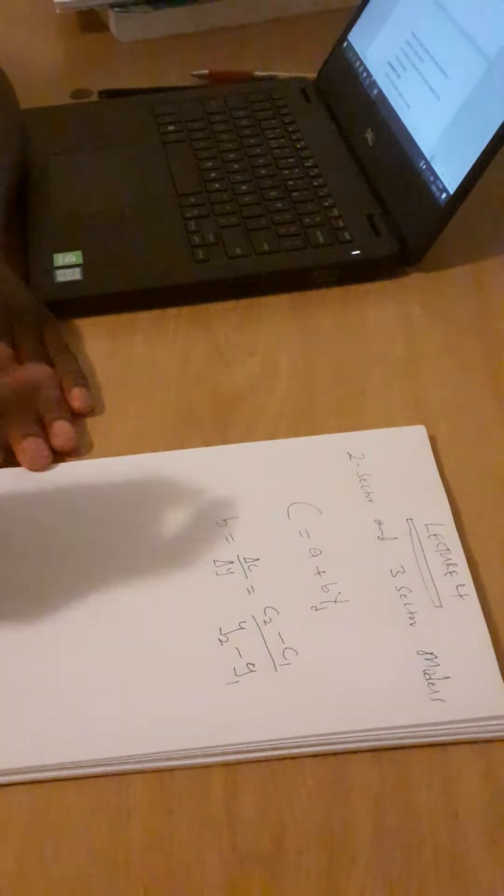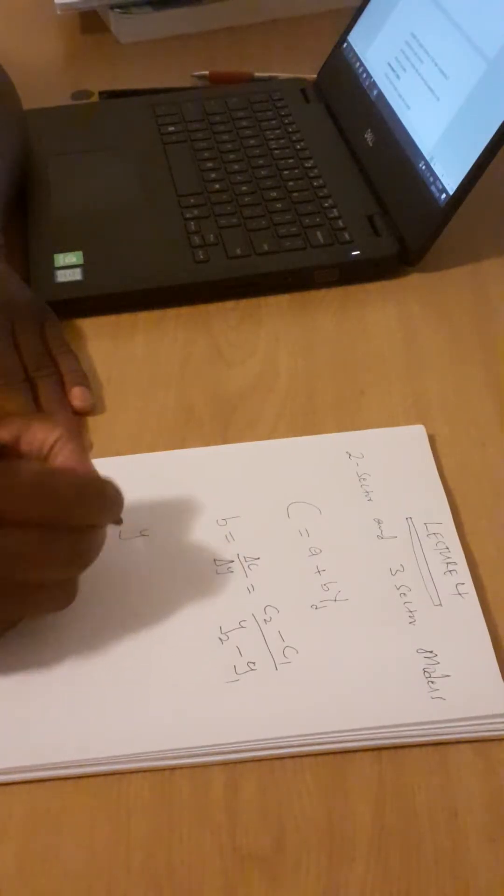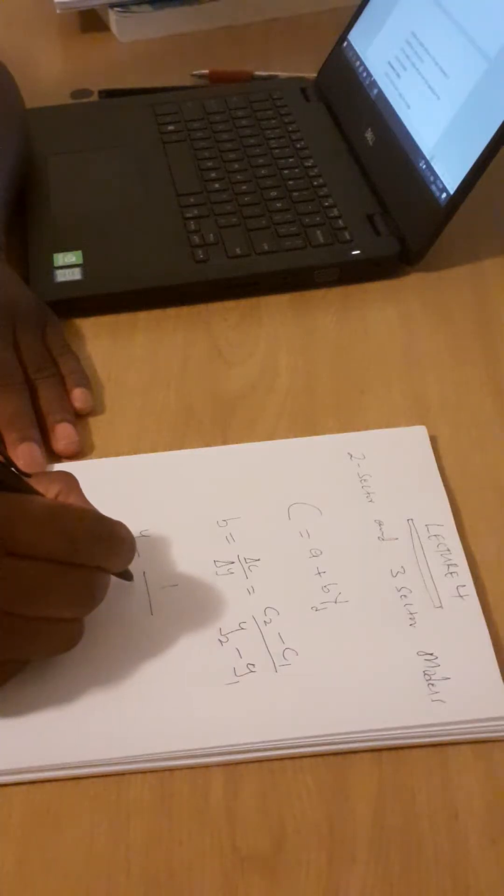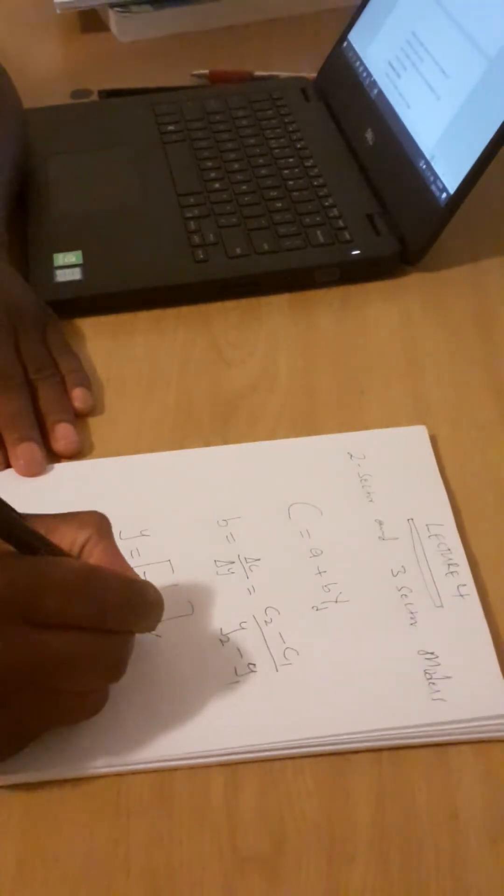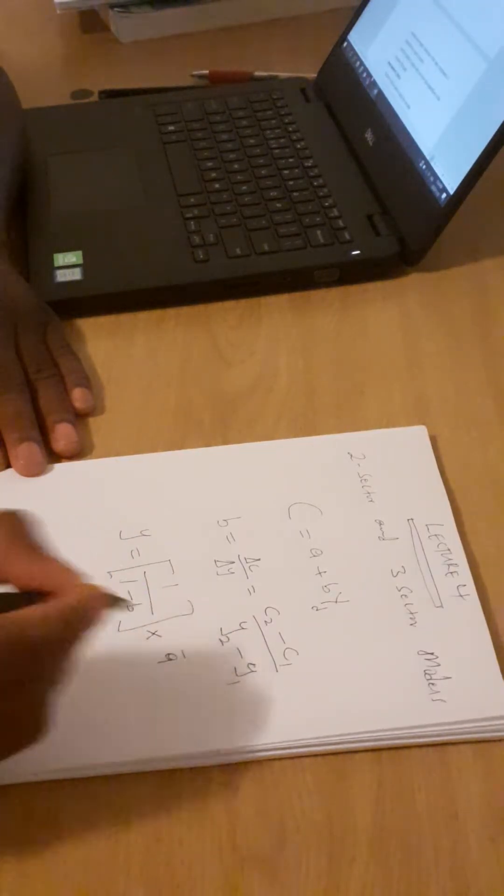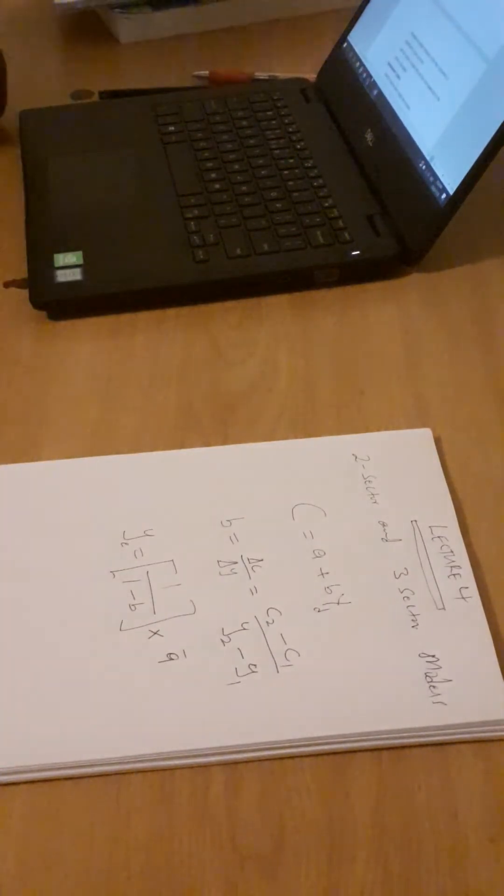And then we must also be able to find the equilibrium income. And the equilibrium income is equal to 1 over 1 minus MPC, which is B. If you take this, which is commonly known as multiplier, and then you multiply it by your autonomous expenditure, it must give you the equilibrium income.